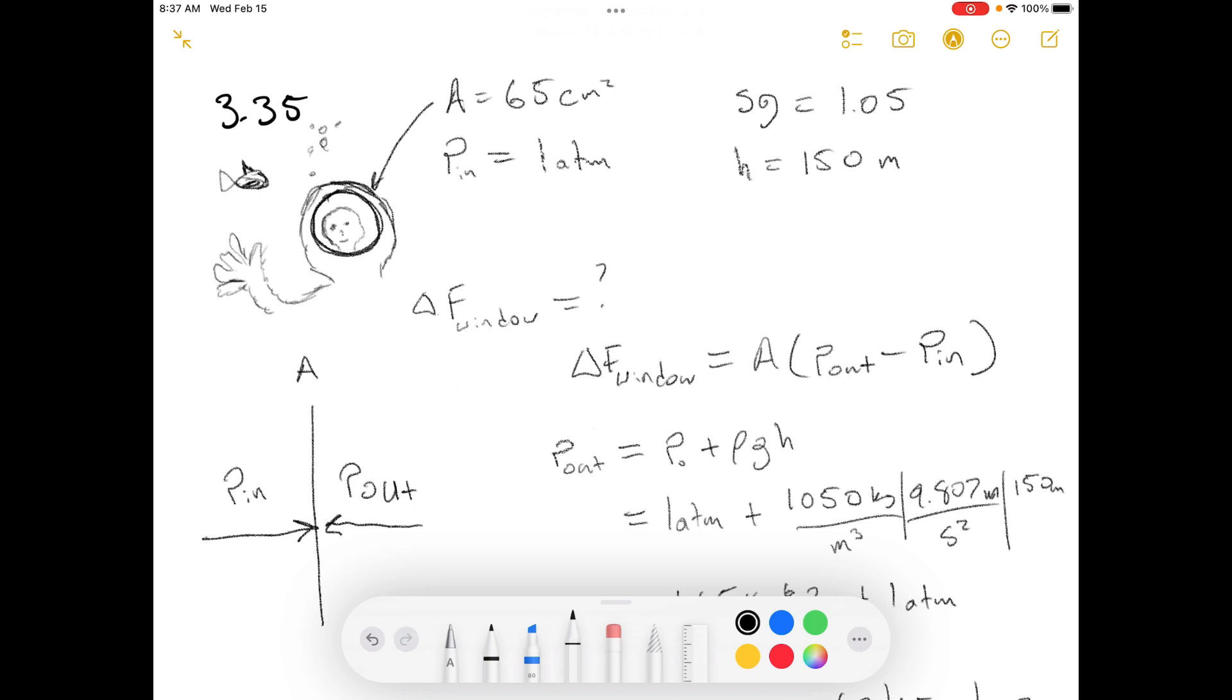Today we're working out of Elementary Principles of Chemical Processes 3rd Edition. We're doing problem number 3.35. I'll go ahead and read the problem statement.